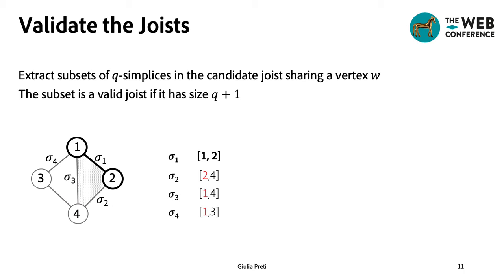Therefore, once we have the group of simplices sharing a code with a given simplex, we need to determine which subsets form a joist. We do so by extracting subset of simplices sharing a common vertex w, and then checking if the size is q plus 1.